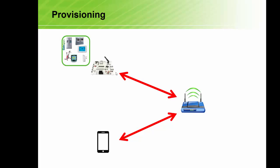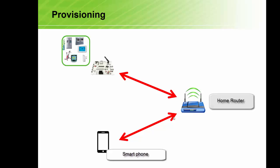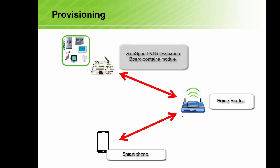So this is the provisioning end point that we want to achieve. This is where the smartphone is connected to the home network — the router for the home network — and the Gainspan module is also connected to the router for the home network. And we can talk to the sensors on the Gainspan EVB through the existing network.